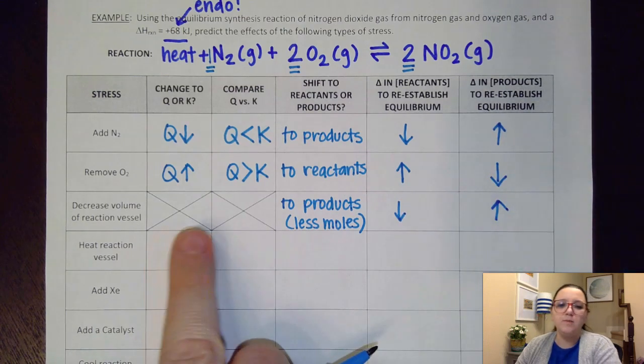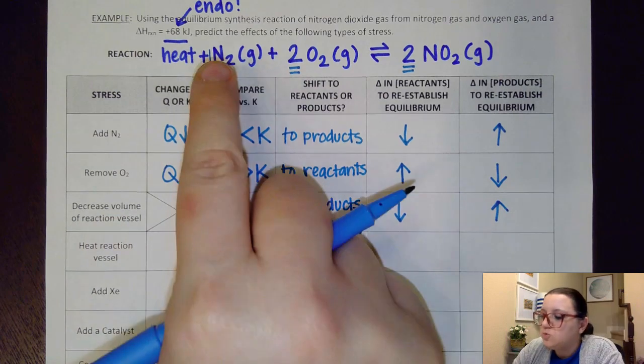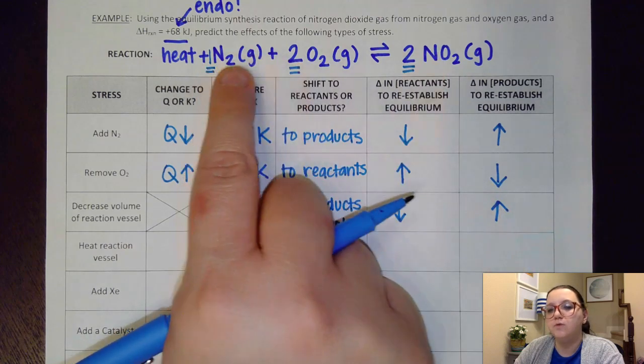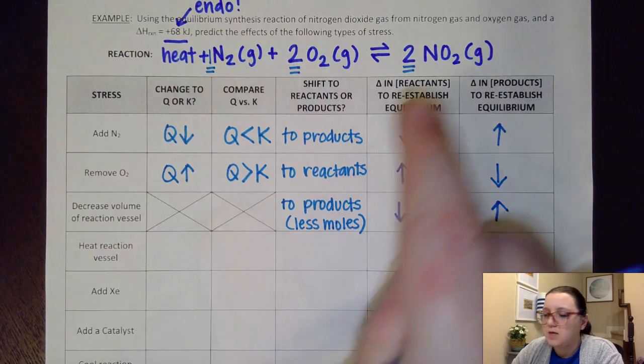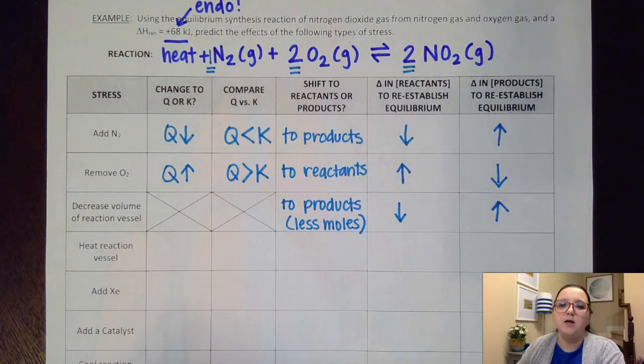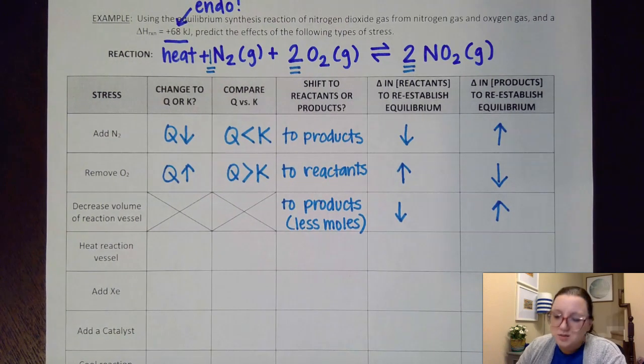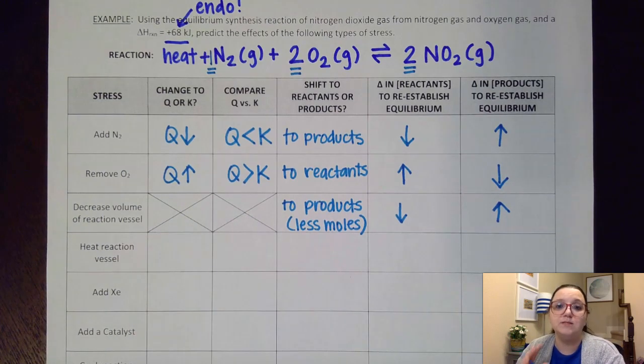Now you notice I didn't worry about the Q versus K here, but I'll be honest, here's what's happening. When I decrease that volume of the reaction vessel, each one of these concentrations would increase. But remember, I had more moles over here, so the increase of reactants is more noticeable than the increase of products. And so that would mean that my reactants got too big, and so that's why we're shifting to the product side. So you could do a Q versus K thing, but honestly, talking about the number of moles is by far the easiest way of justifying what that would do to our equilibrium.